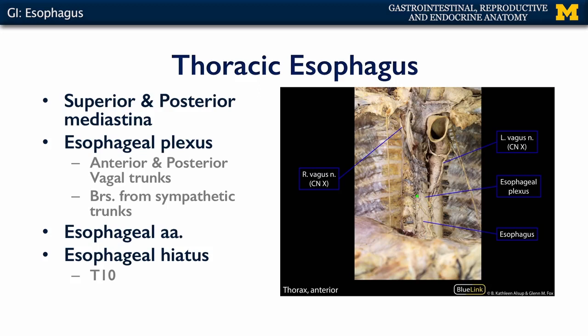In terms of blood flow, the thoracic portion of the esophagus receives branches from the thoracic part of the descending aorta — the thoracic aorta — via the esophageal arteries. This part of the esophagus ends at T10 as it is transmitted through the esophageal hiatus of the diaphragm.